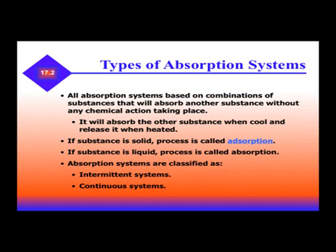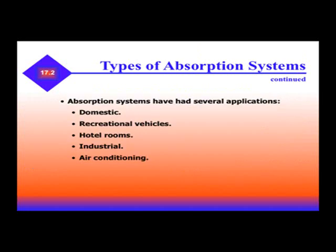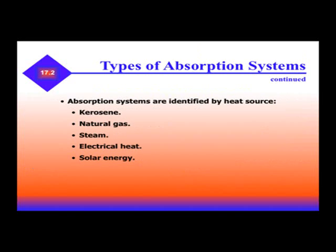Absorption systems are classified as intermittent systems or continuous systems. They have several applications: domestic or residential environments, recreational vehicles — this is a primary spot where you see them — hotel rooms, industrial use, and air conditioning. Absorption systems can be identified by the heat source: kerosene, natural gas, steam, electrical heat, or solar energy.